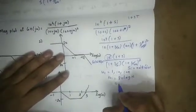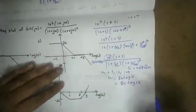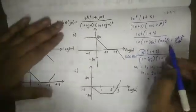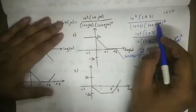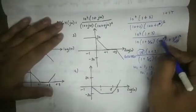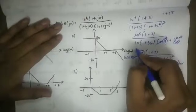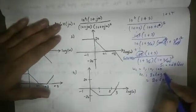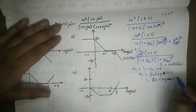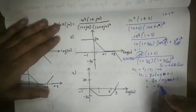So 20 log of 10 equals 20 dB. However, simplifying the transfer function: 100 squared is 10 to the power 4, which cancels with the numerator 10 to the power 4, leaving a factor of 1 by 10, which is 0.1. So the initial magnitude is 20 log of 0.1, and log of 0.1 is minus 1, giving minus 20 dB.